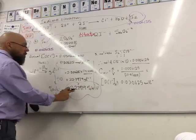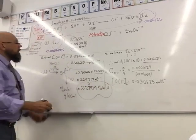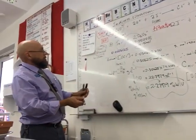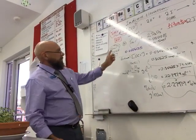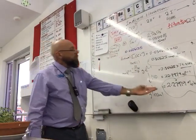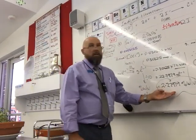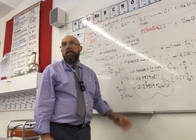We can check our significant figures — it looks like three significant figures — and we apply sig fig rounding at the very end of the calculation, not partway through.